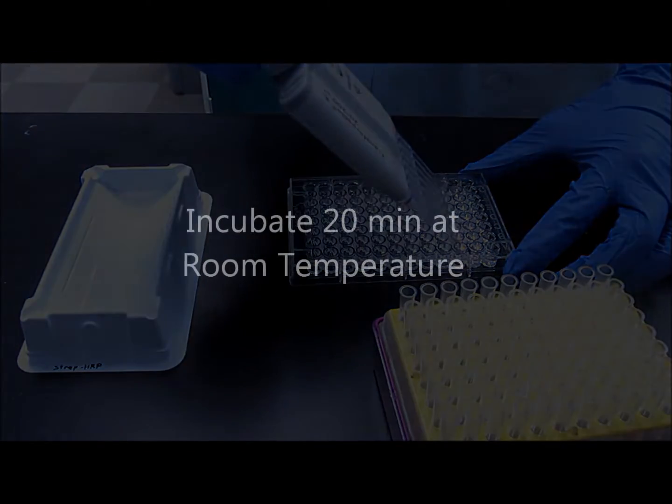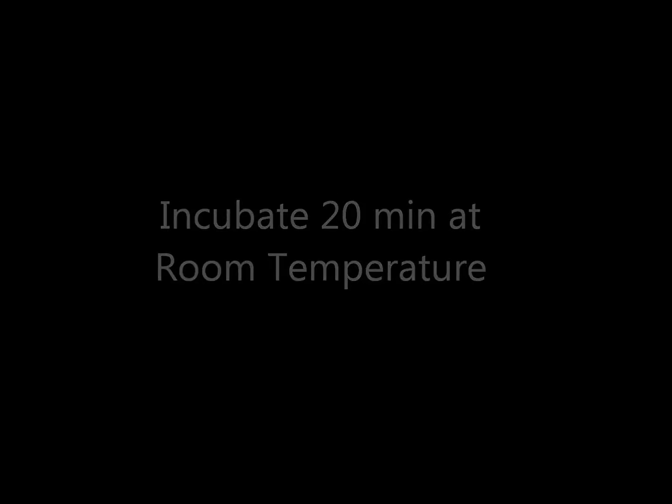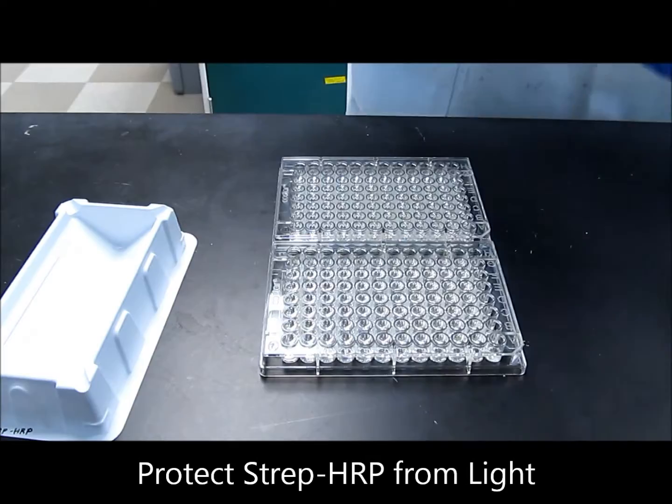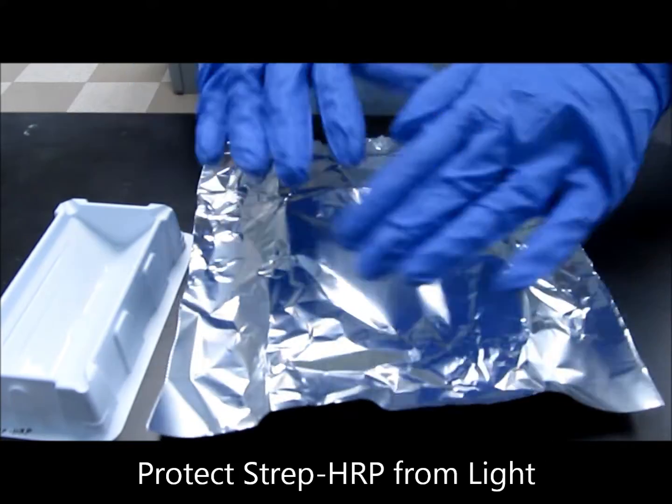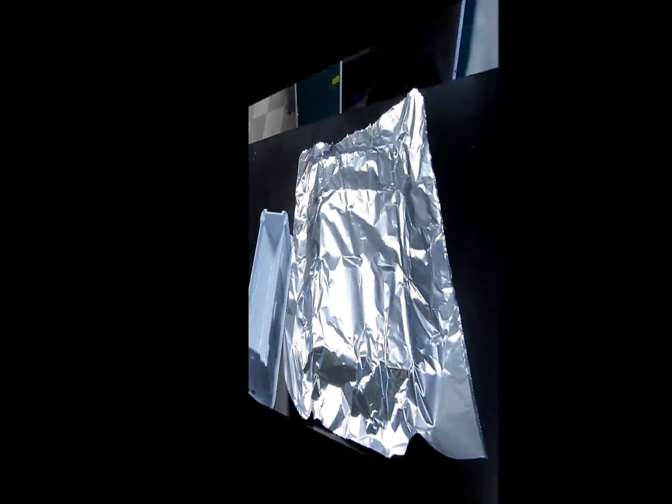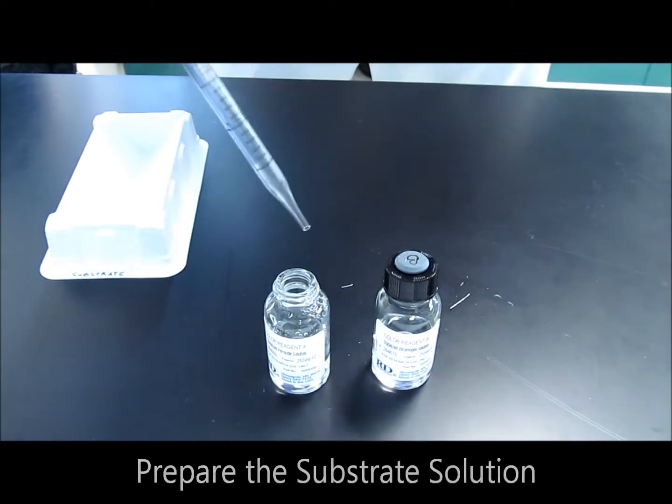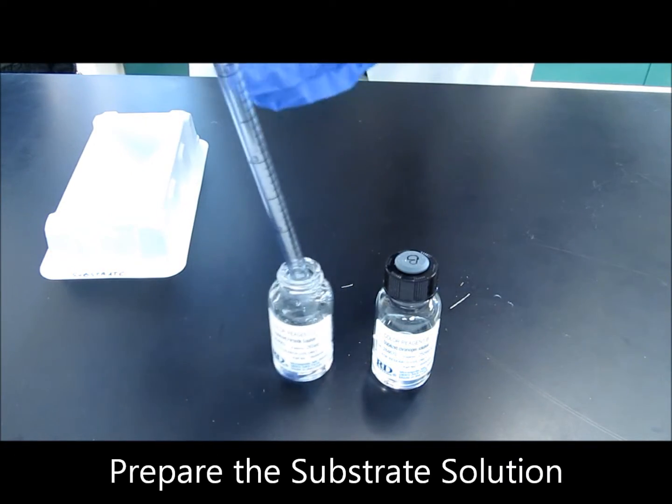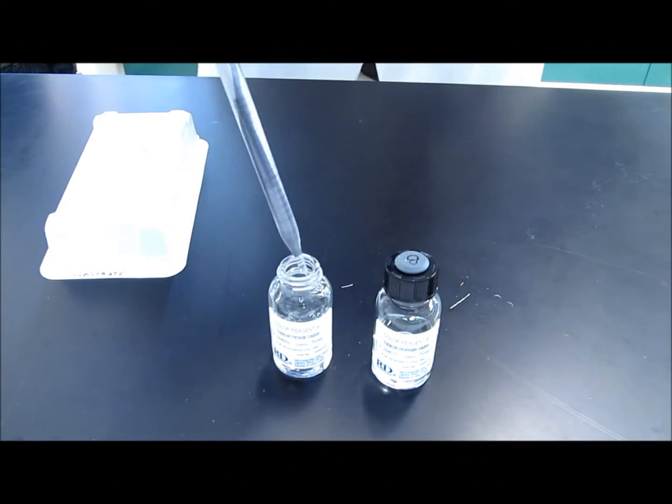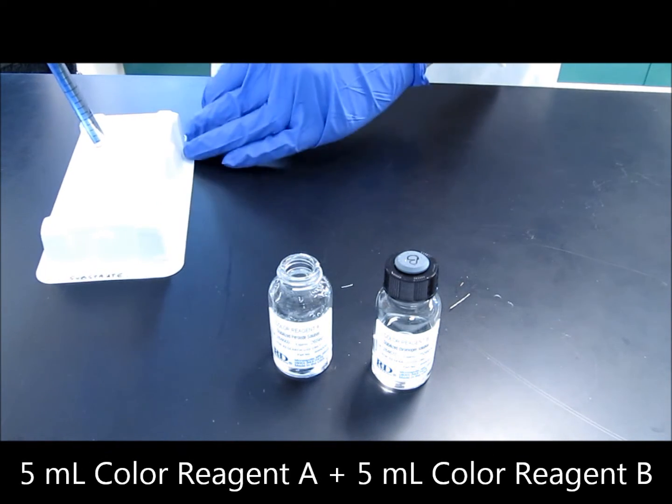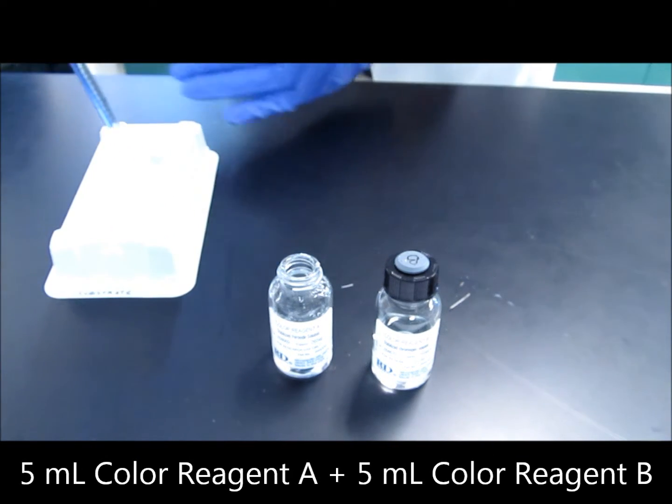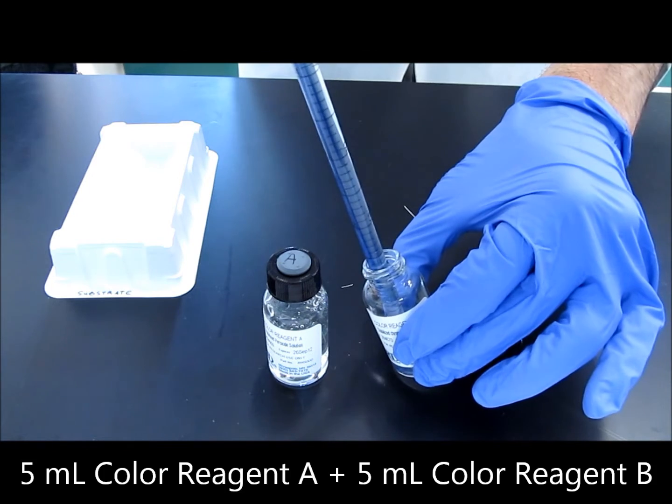Incubate this time for only 20 minutes at room temperature and be sure to protect the plate from light. This can be accomplished by covering the plate with some aluminum foil or a cardboard box. A few minutes before the 20-minute incubation is complete, prepare the substrate solution. For this protocol, you can simply combine 5 milliliters of color reagent A with 5 milliliters of color reagent B.